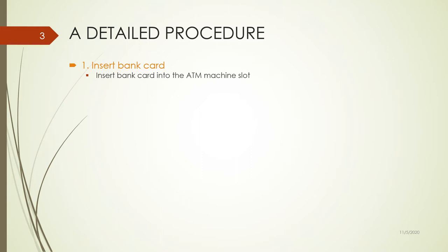First, you insert the bank card into the ATM machine slot. You can specify the slot orientation — up, down, left, right — and wait until you see a welcome message. Then you select the language. Inserting a bank card requires a few more steps that must be included in the procedure. Nowadays people talk about SOP — Standard Operating Procedure — so it has to be detailed. A detailed procedure is much better for asking someone to execute a task.